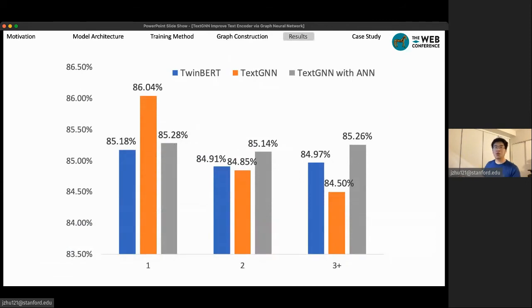So we observe strong performance of the TextGNN model, even when comparing to the extremely good TwinBERT model. In this graph, we break the example into three bins by their ads frequency in our sample. So the first three bars are the ones that only show up once in our sample, which corresponding to the most rare ads. We see that TextGNN model show an extremely large improvement in the first category, the rarest ads.